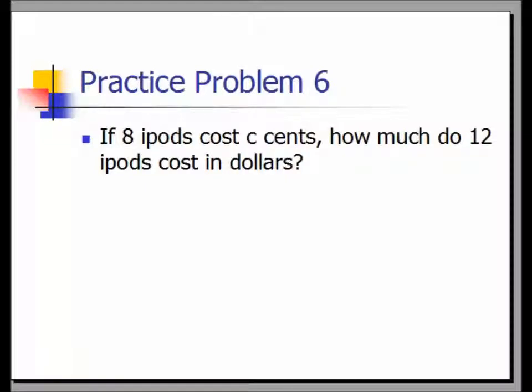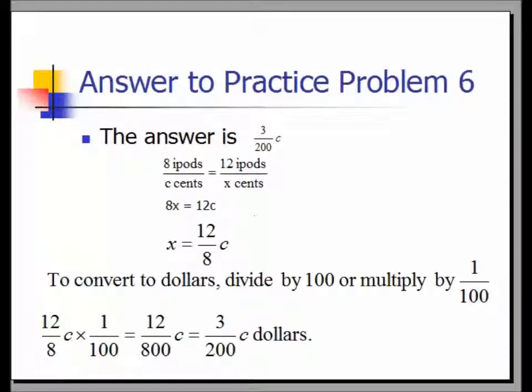Practice problem six: If 8 iPods cost C cents, how much do 12 iPods cost in dollars? The answer is 3C over 200. The proportion is 8 iPods over C cents equals 12 iPods over x cents. Cross multiplying gives 8x equals 12C, so x equals 12C/8. To convert to dollars, multiply by 1 over 100, giving 12C over 800. Reducing to lowest terms gives 3C over 200.